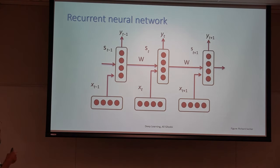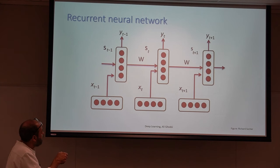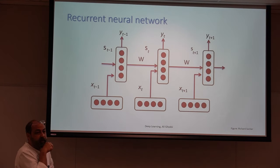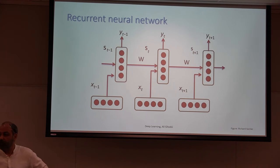These feed-forward networks should have the same weights. The weights going from the input space to the hidden space, and from the hidden space to the output space, should be the same for all of them. Also, the connections between different hidden spaces — those weights should also be the same. If they are not the same, we can't learn.